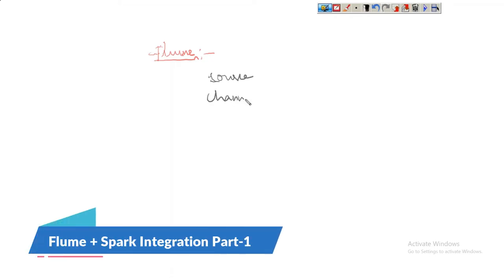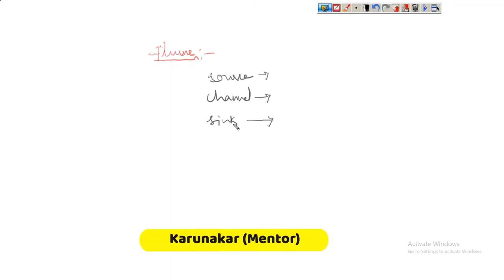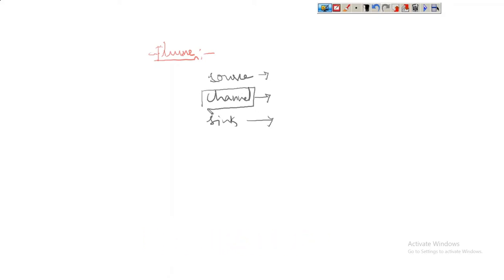Let me show once again Flume — it is made up of three components as we discussed in the last session: source, channel, and sink. Source contains information of the external source from which the Flume application pulls data. Sink is the target system where data has to be delivered. Channel is the intermediate storage before data gets delivered into the sink, and it is the critical component in Flume configurations because data gets staged here. If the channel goes down, the entire Flume application goes down and we lose the data.